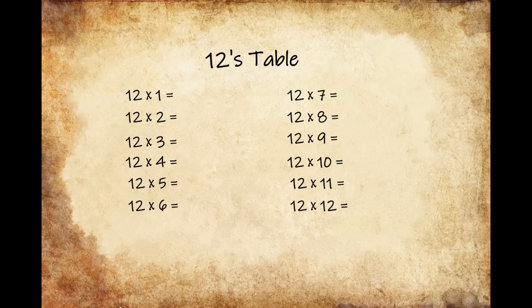And now for the twelves table. 12 times 1 gives us 12, 12 times 2 gives us 24, 12 times 3 gives us 36, 12 times 4 gives us 48, 12 times 5 gives us 60, 12 times 6 gives us 72, 12 times 7 gives us 84.